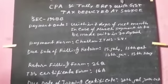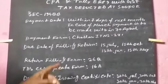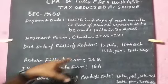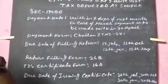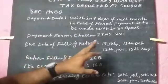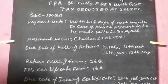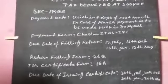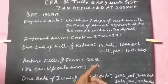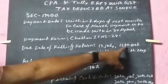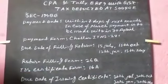The payment is in the form of ITSN 281. If you want to get a TDS return, we will file a TDS return. The due date of filing the return is 15 July, 15 October, 15 January, and 15 May.